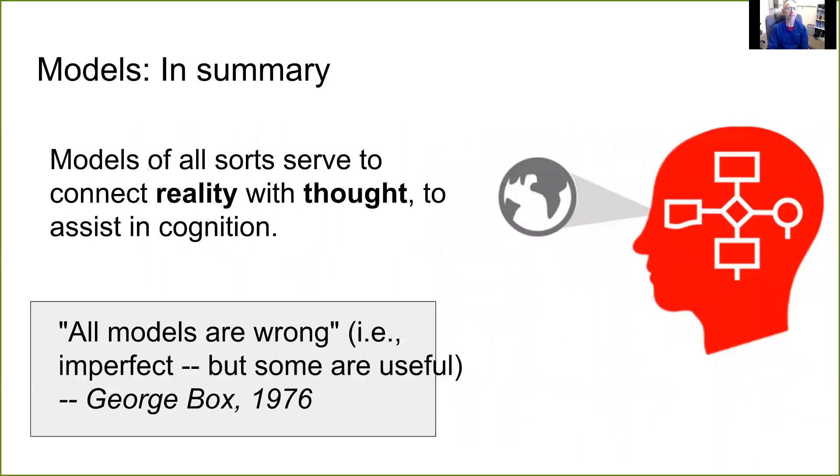So finally, in summary, I would say models of all sorts serve to connect reality with thought to assist in cognition, reality depicted by the earth there and thought in the head. A famous quote by a statistician, which is quite apropos is a longer quote, but what people often quote from that is all models are wrong. What he meant is that all models are imperfect, since they're models of reality and they're not perfectly reality, but some are useful. And I think that is a good summation.